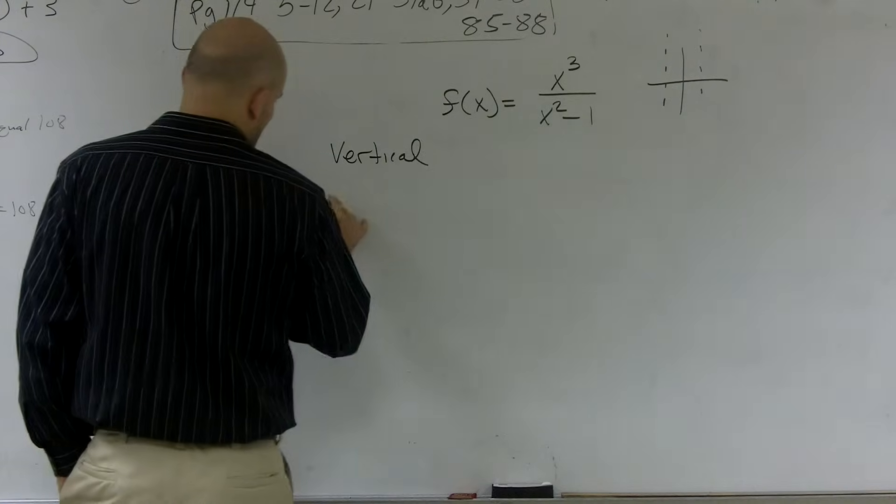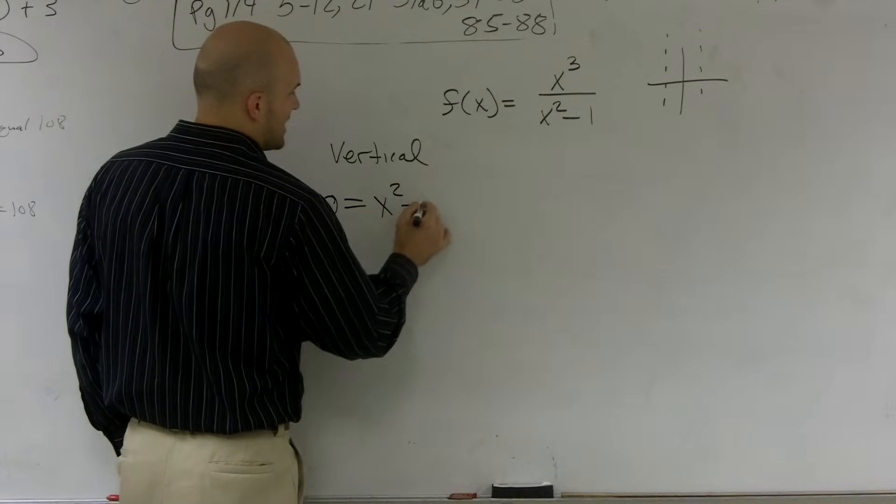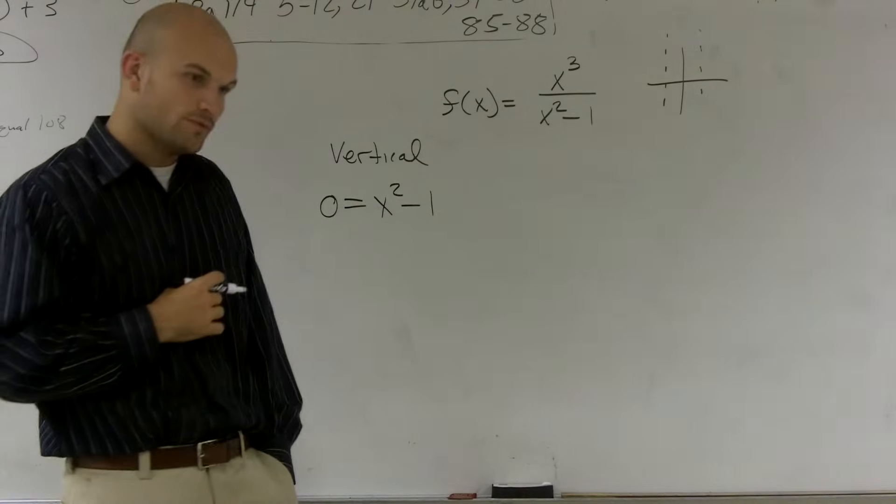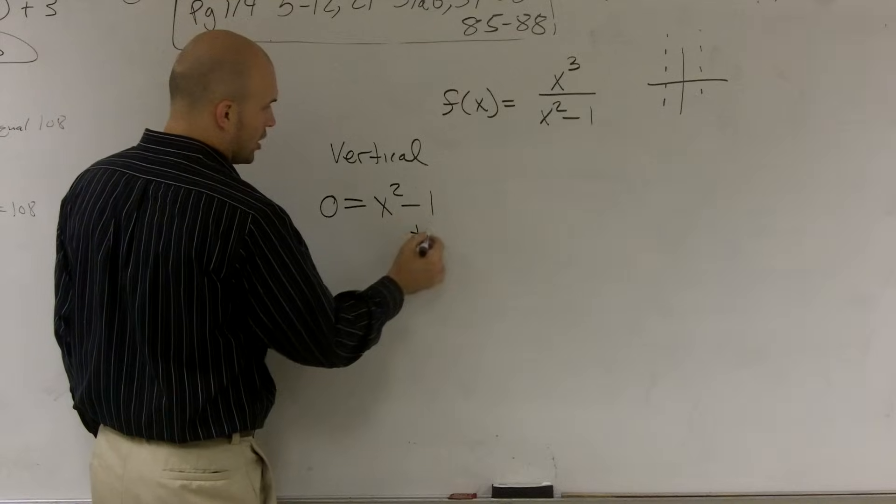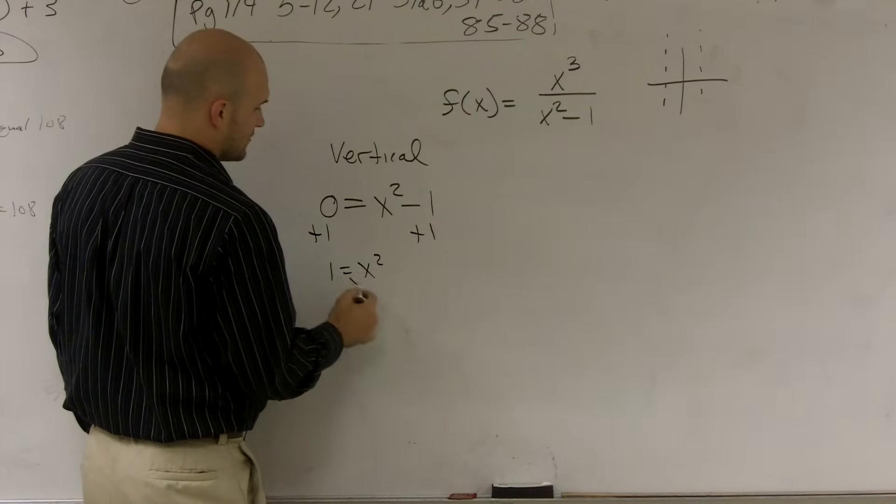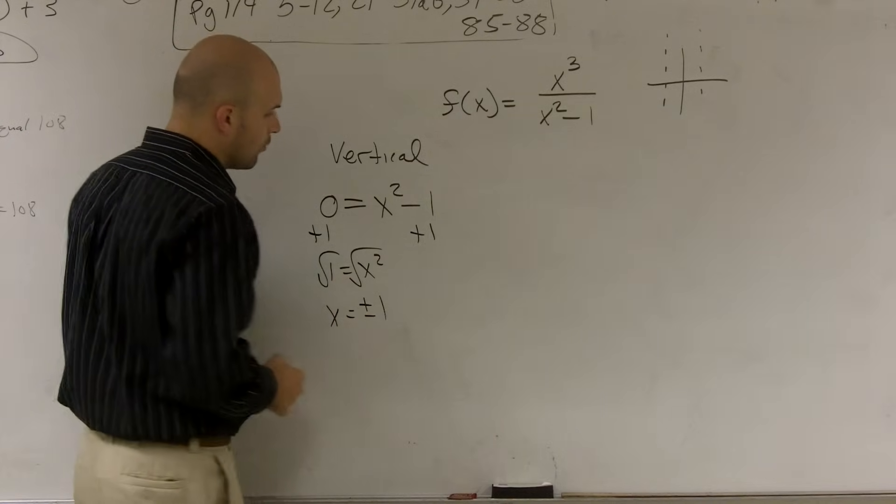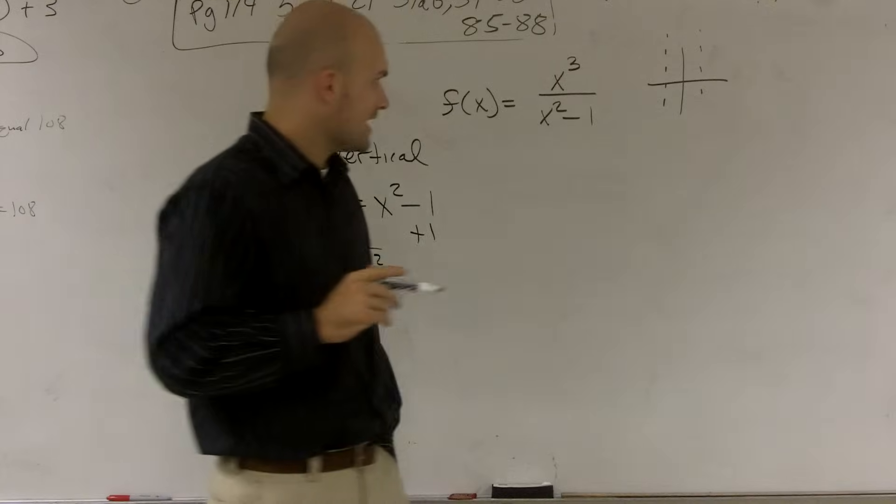So to find those values that make our bottom polynomial 0, I need to set our bottom polynomial equal to 0. Then when I solve, I get 1 equals x squared. When I take the square root, I get x equals plus or minus 1. Therefore, I have two vertical asymptotes.